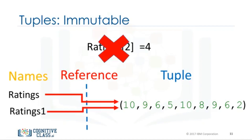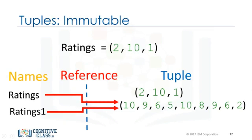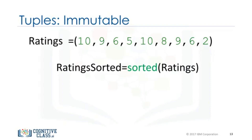Let's say we want to change the element at index 2. Because tuples are immutable, we can't. Therefore, ratings1 will not be affected by a change in rating because the tuple is immutable. We can assign a different tuple to the ratings variable. The variable ratings now references another tuple. As a consequence of immutability, if we would like to manipulate a tuple, we must create a new tuple instead. For example, if we would like to sort a tuple, we use the function sorted. The input is the original tuple, and the output is a new sorted tuple.